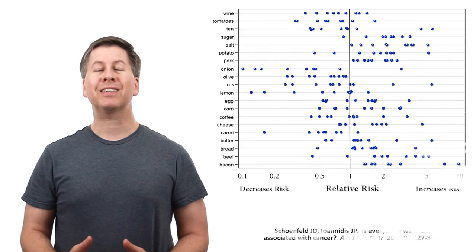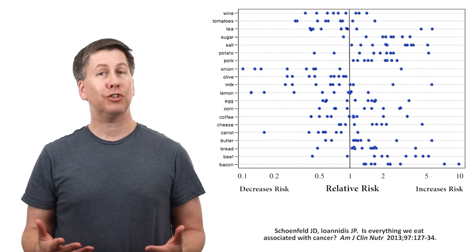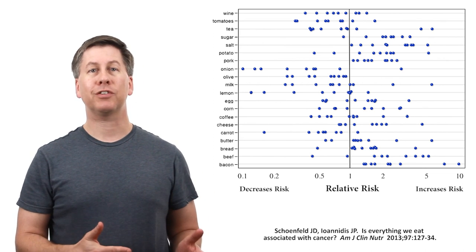Here's a graphical summary for all ingredients which were investigated in at least 10 studies. Yeah, so apparently almost everything we eat both causes and prevents cancer.